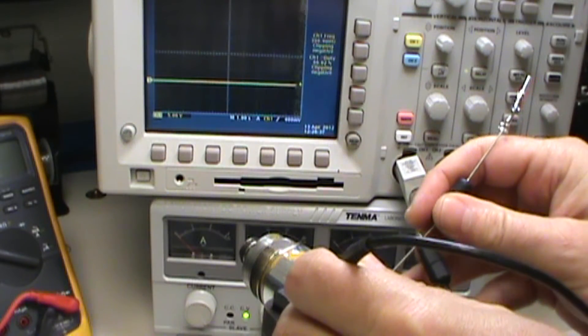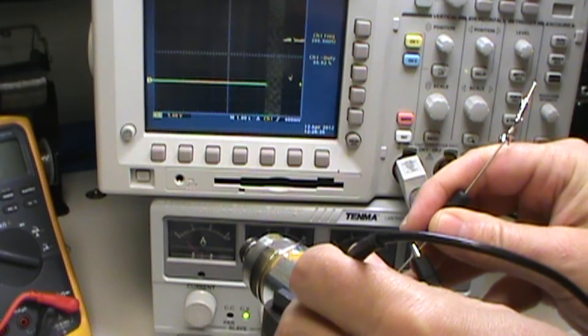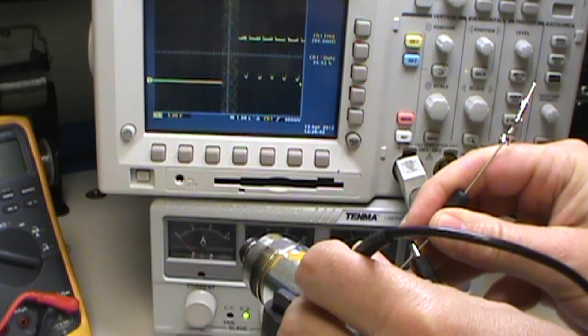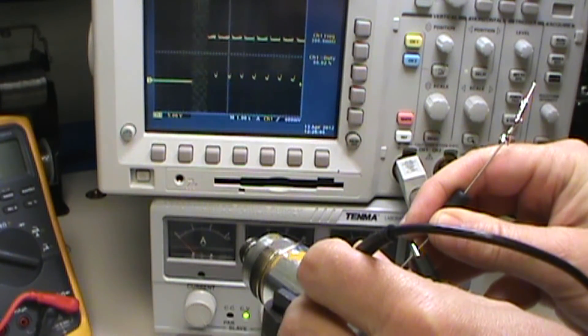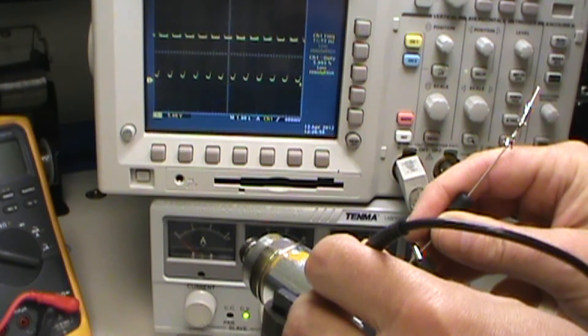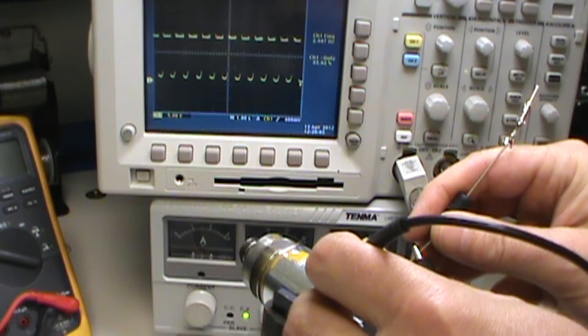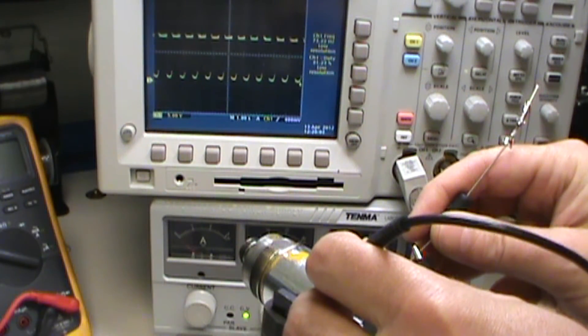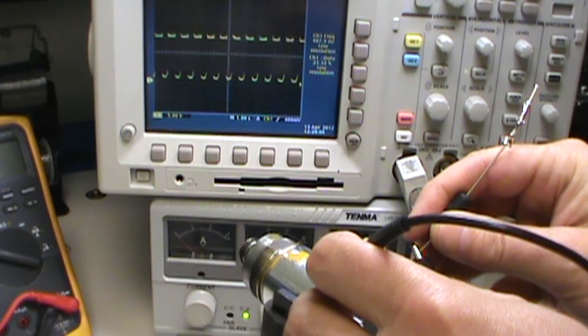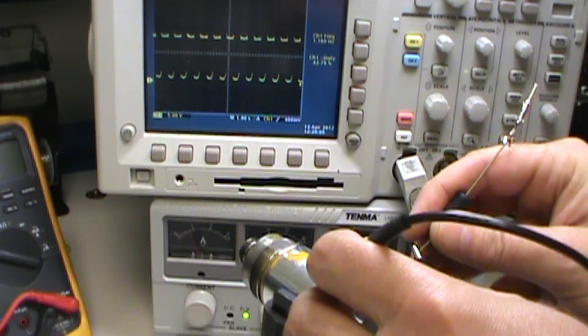Alright, so it's cycling. So now I'm right across the switch itself. So this eliminates the possibility I'm going to show you that it's a bad circuit board connection, since I'm right across the wiring coming off the switch.